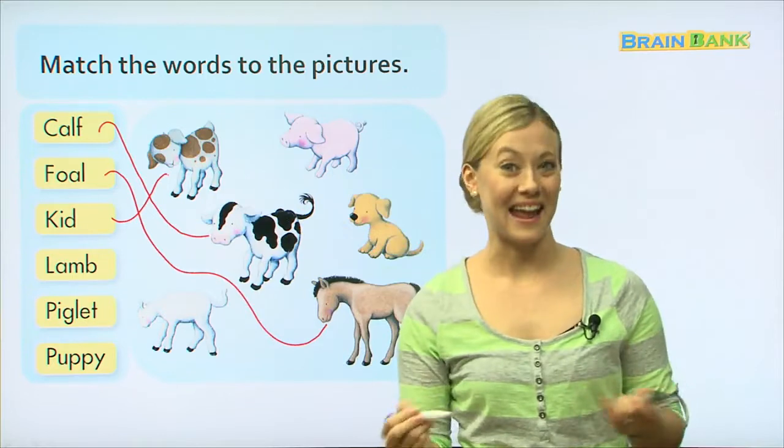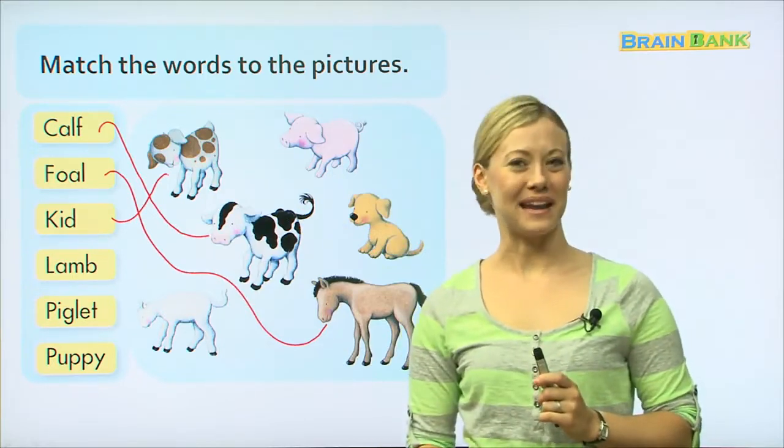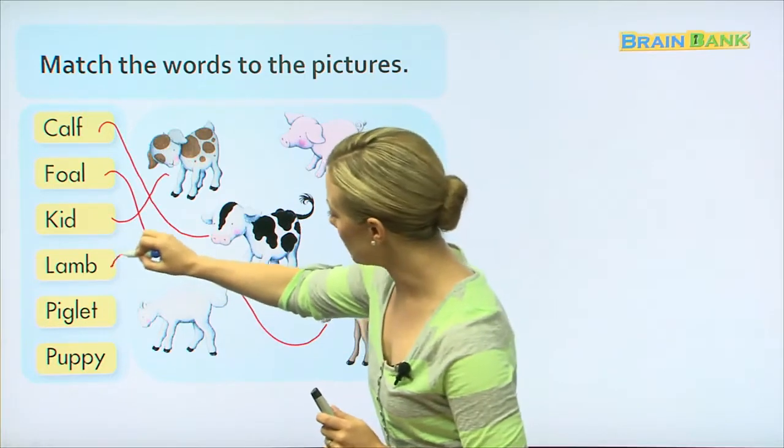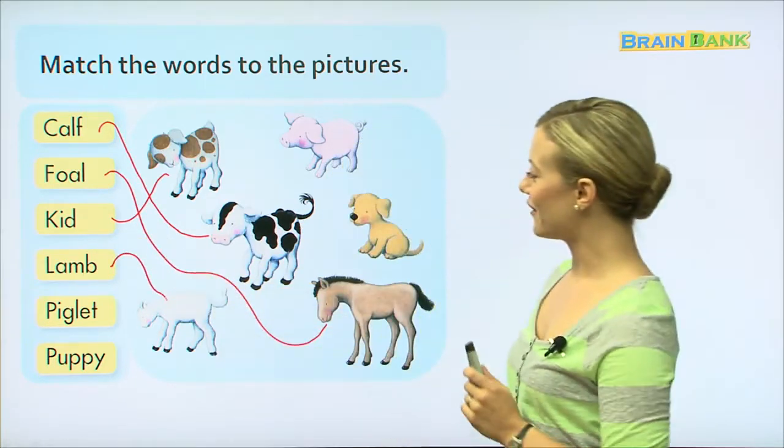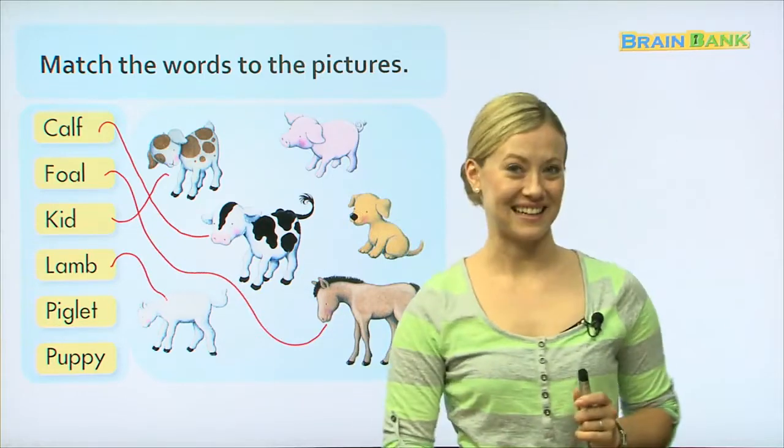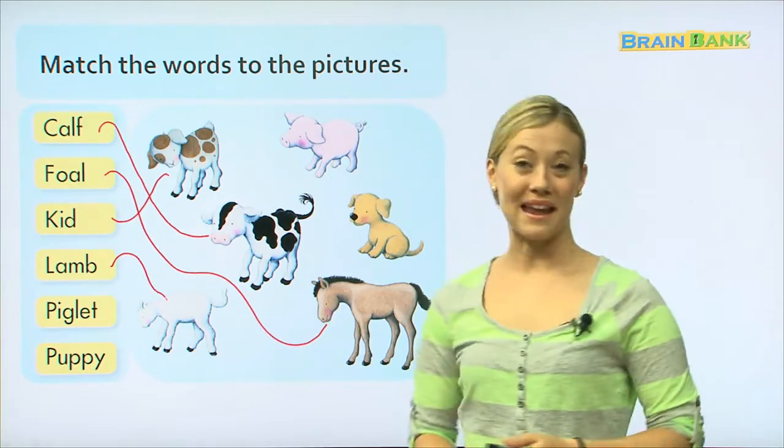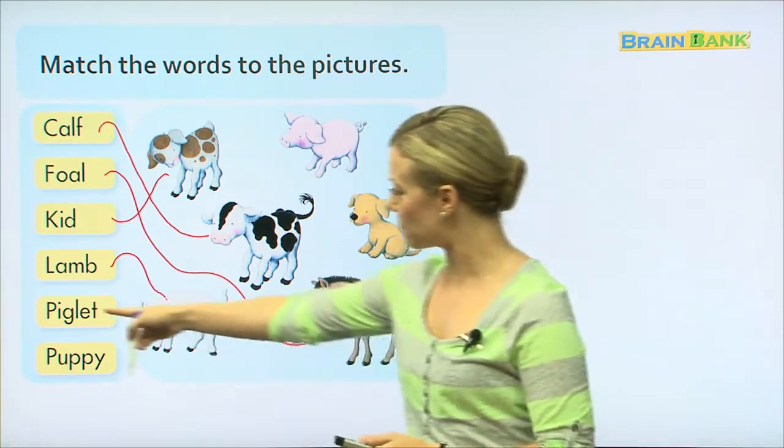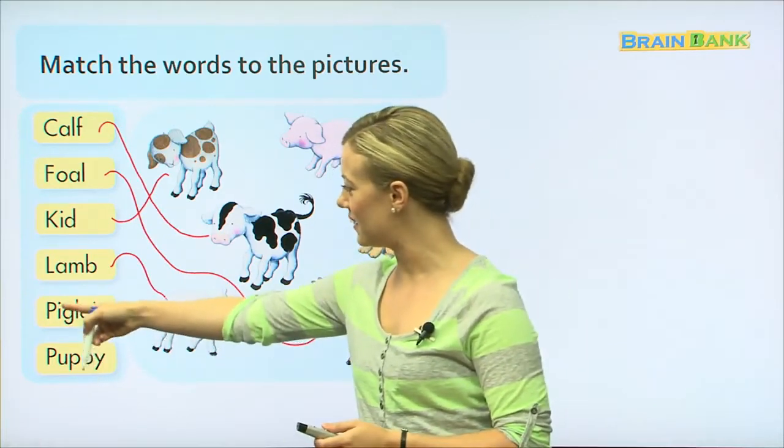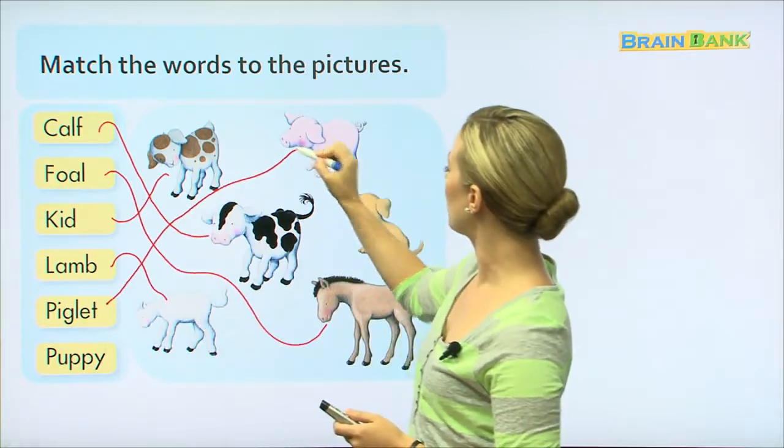What about a lamb? A lamb is a baby sheep. There he is. What about a piglet? This one's easy. A piglet is a baby pig. I see the name right in piglet. Pig, piglet. And the piglet is all the way up here.